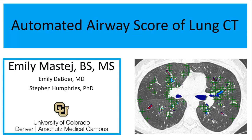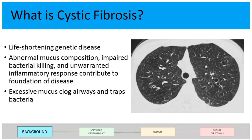My project specifically looked at automated scoring of patients with cystic fibrosis. Cystic fibrosis, or CF, is a genetic disease with more than 90% of affected individuals dying from respiratory failure. The origins of cystic fibrosis are unknown, but impaired bacterial killing, unwarranted inflammatory response, and abnormal mucus composition all contribute to the foundation of cystic fibrosis.